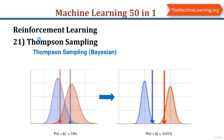Thompson Sampling is an algorithm for decision problems where actions are taken sequentially in a manner that must balance between exploitation — maximizing immediate performance — and exploration, accumulating new information that may improve future performance. The algorithm addresses a broad range of problems in a computationally efficient manner and is therefore enjoying wide use. Thompson Sampling and Upper Confidence Bound share a fundamental property: both algorithms allocate exploratory effort to actions that might be optimal and are in a sense optimistic.